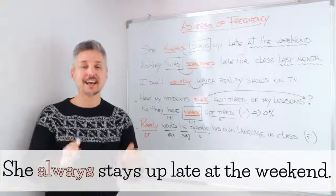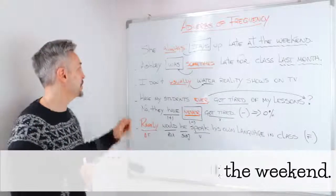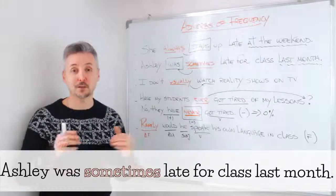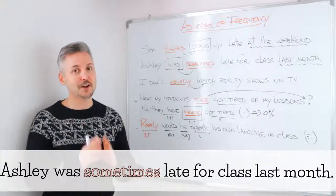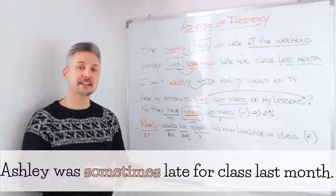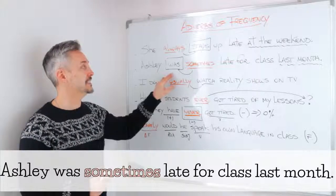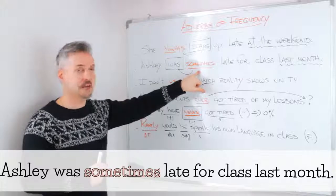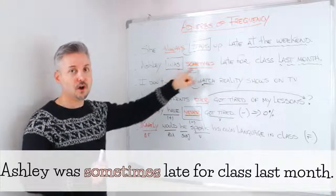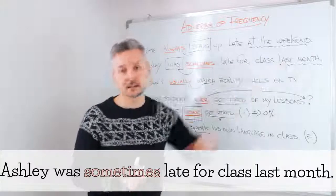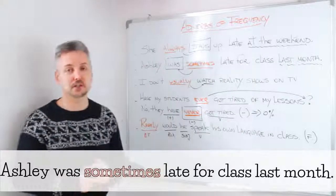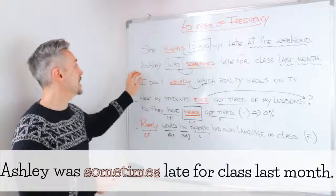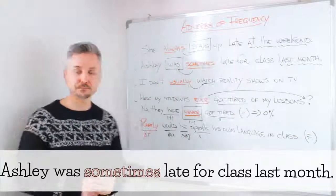There are exceptions. Let's take a look at the first one: "Ashley was sometimes late for class last month." In this case we have the verb "to be," which is almost always an exception. The adverb of frequency is placed after the verb to be — not before. So: "Ashley was sometimes late for class last month." "Last month" is again a time expression placed at the end, or it could go at the beginning: "Last month, Ashley was sometimes late for class."